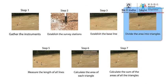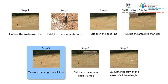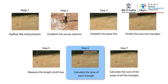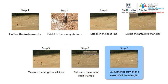Step 4: Divide the area into triangles. Step 5: Measure the length of all lines. Step 6: Calculate the area of each triangle. Step 7: Calculate the sum of the areas of all the triangles.